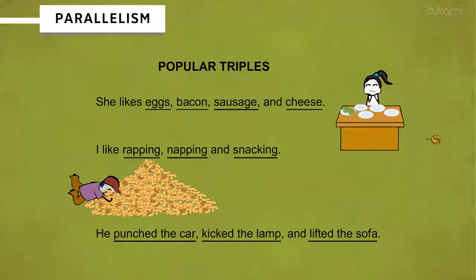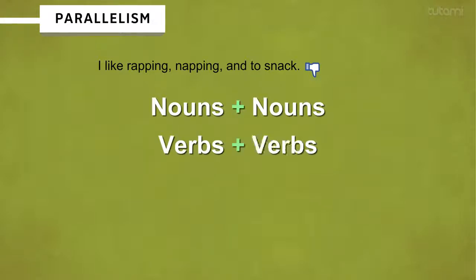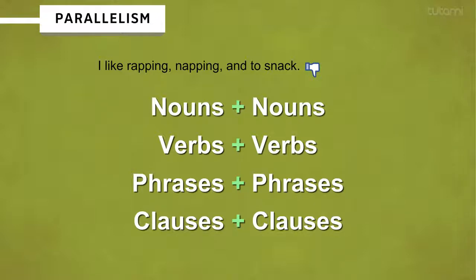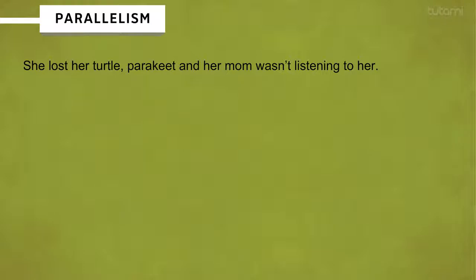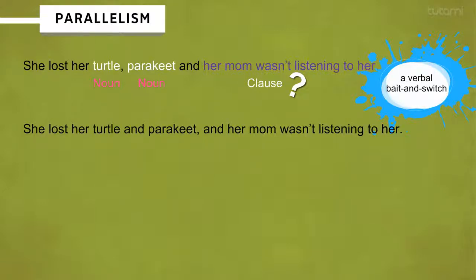Beware of these types of faulty parallelisms, which might look like this: "I like rapping, napping, and to snack." To correct faulty parallelisms, you need to match nouns with nouns, verbs with verbs, and phrases or clauses with similarly constructed phrases or clauses. Here's another example: "She lost her turtle, parakeet, and her mom wasn't listening to her." This is a verbal bait and switch — the reader expects another noun after 'turtle' and 'parakeet' and feels cheated when the last element is a clause instead. The corrected sentence should read: "She lost her turtle and parakeet, and her mom wasn't listening to her."